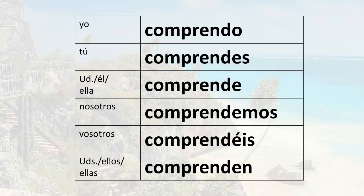Remember the conjugation of the verb comprender in the present tense. If you want to make a yes or no question out of a statement, all you have to do is reverse the word order. For example, 'yo comprendo' means 'I understand.' If you want to say 'do I understand,' you reverse it.